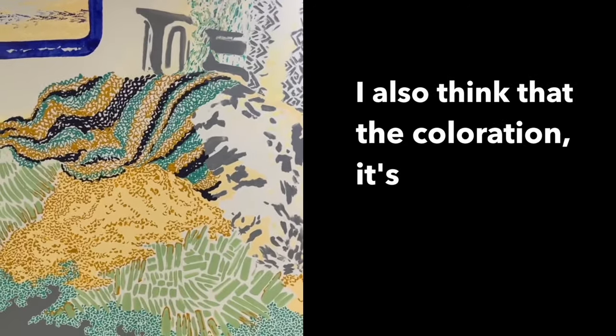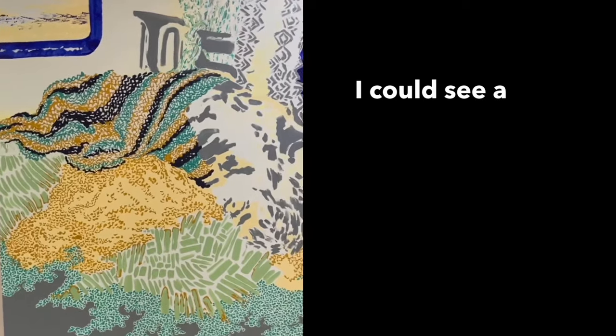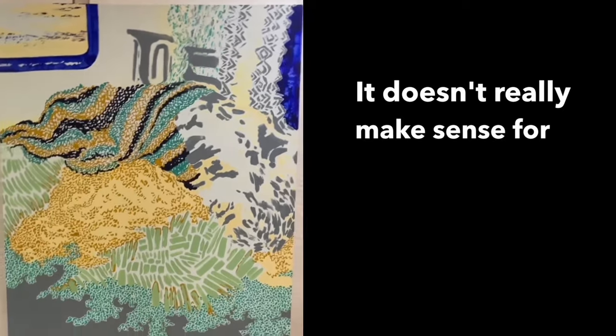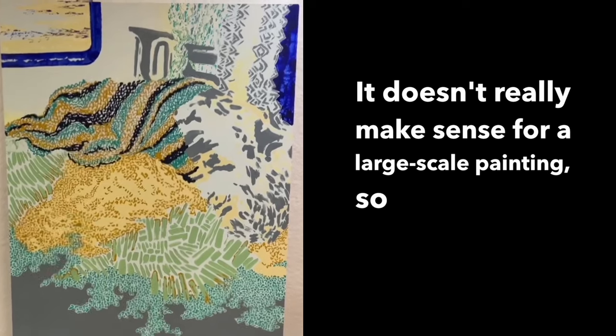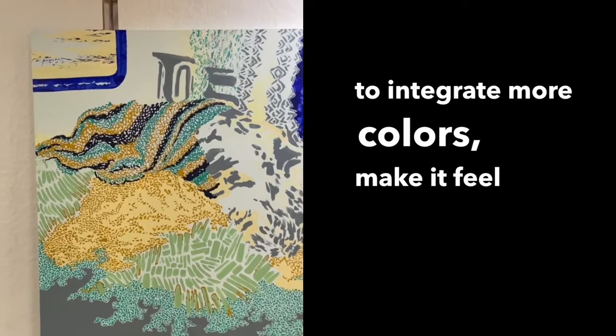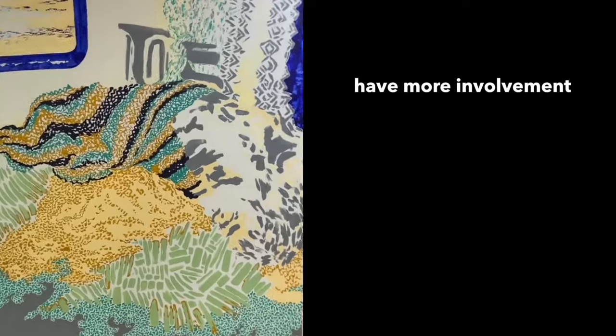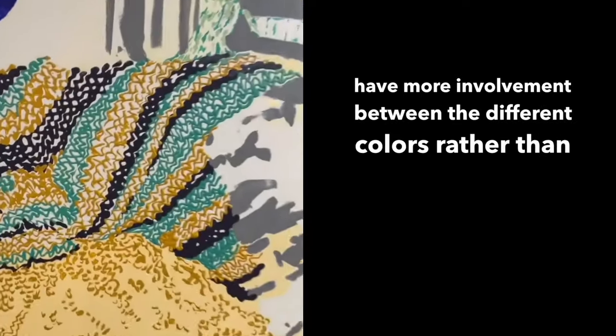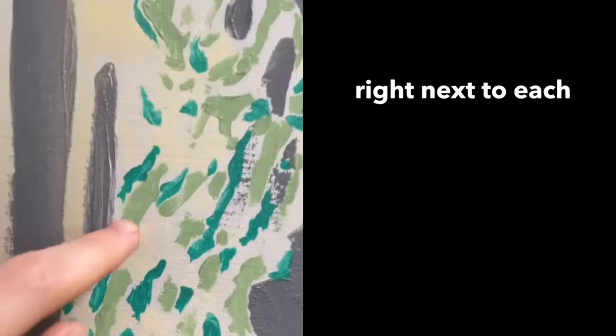I also think that the coloration is more like a silk screen. I could see a print of this. It doesn't really make sense for a large scale painting, so I really want to integrate more colors, make it feel more rich, have more involvement between the different colors rather than laying them right next to each other.